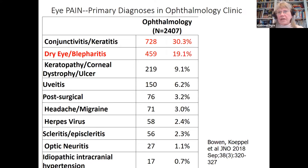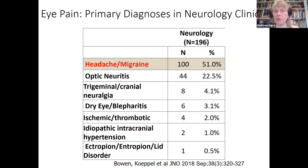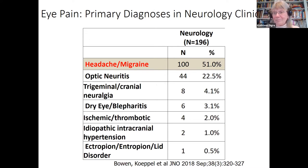We did a study at the University of Utah Moran Eye Center and the University of Zurich asking what diagnoses come into the eye clinic and neurology clinic. In almost 2,400 patients presenting with eye pain, the diagnoses were conjunctivitis, keratitis, dry eye, keratopathies, uveitis, post-surgical findings, and even migraine in the eye clinic. In the neurology clinic, over half had migraine, optic neuritis was also common, and cranial neuralgias were common. The eye clinic likely missed migraines, and the neurology clinic probably missed dry eyes.